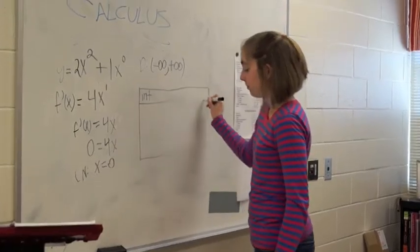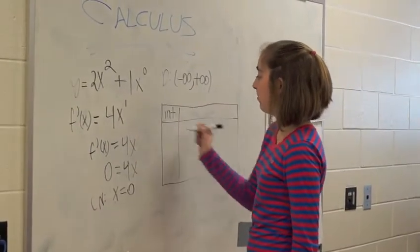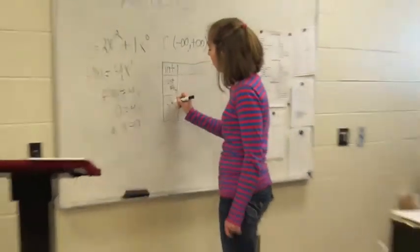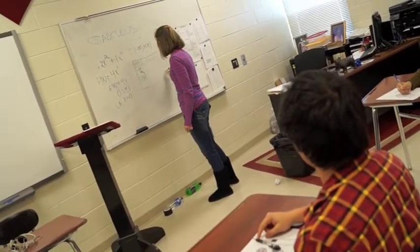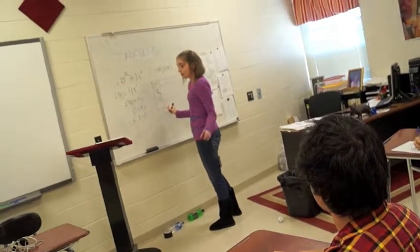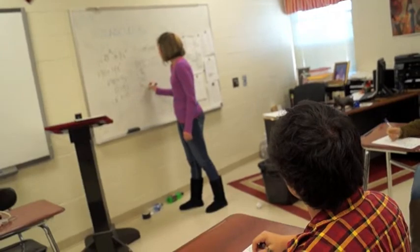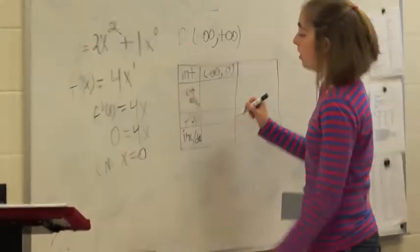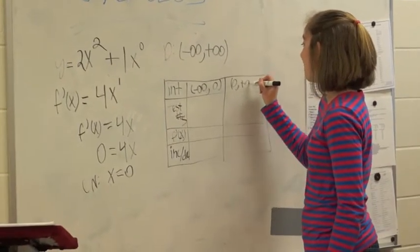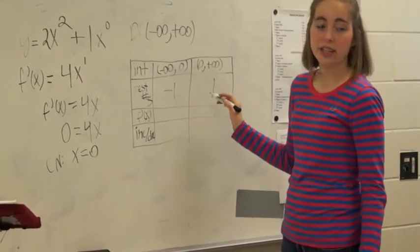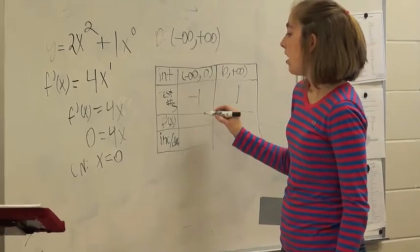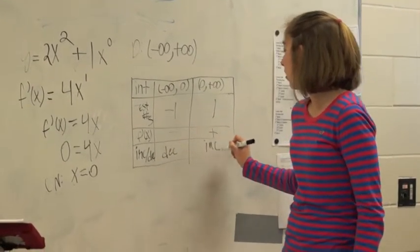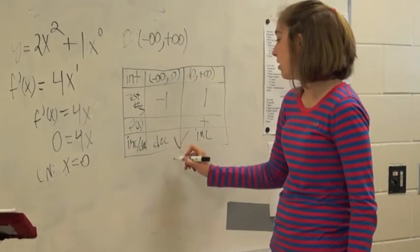You have your intervals, then you have your test numbers, f prime of x — and that's where you're going to find out if it's positive or negative. And then you have your increasing or decreasing. So, negative infinity to your critical number 0, and 0 to positive infinity. You plug them in and that's going to be negative, then positive. Decreasing, then increasing. In between decreasing and increasing, so that's going to be a relative minimum.